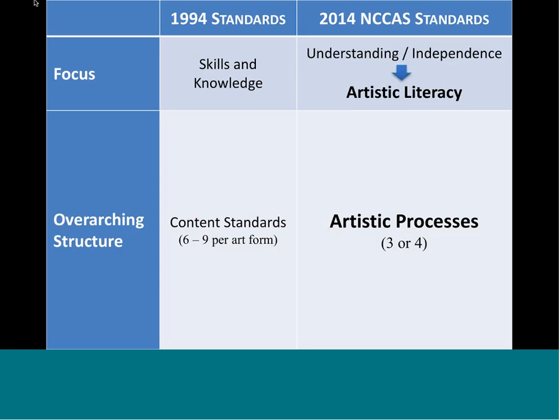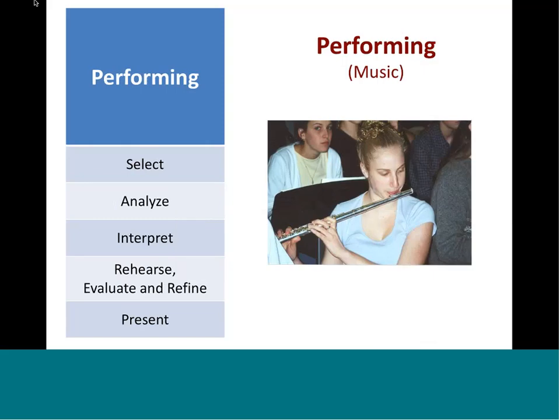Here's a simple comparison between the 1994 and 2014 standards. The 1994 standards were focused on skills and knowledge, with content standards that varied from six in visual arts to nine in music. Now we have as central organizers the umbrella of artistic literacy and the artistic processes — either three or four depending on which art form. In music, the performing process has five steps called process components: select, analyze, interpret, rehearse, and present.